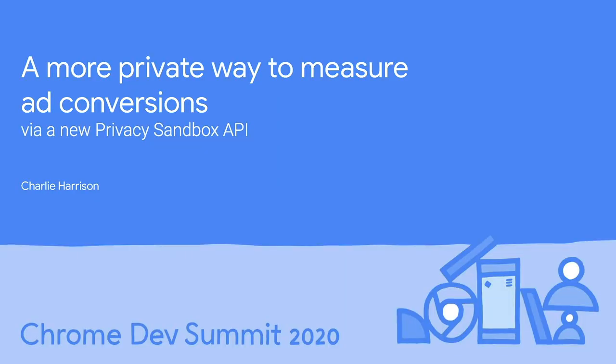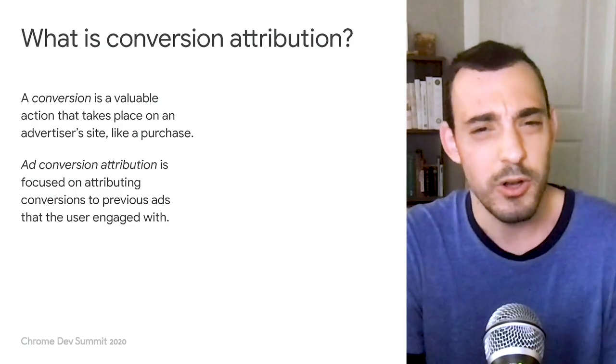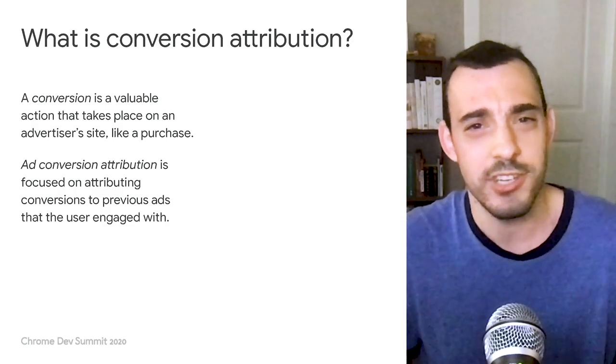Hey everyone, I'm Charlie Harrison, a software engineer working on the Privacy Sandbox. The Privacy Sandbox is a set of proposals to satisfy third-party cookie use cases without third-party cookies or other tracking mechanisms. I'm here to talk about one new API we're developing to enable conversion attribution for ads without the need for third-party cookies. So what is conversion attribution?